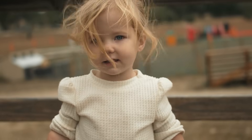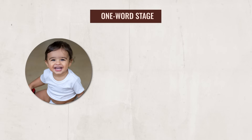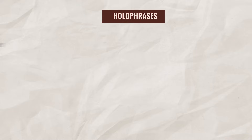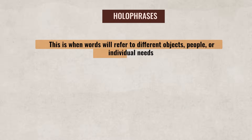Around 12 to 18 months, the child enters the one-word stage. During this stage, the child will start to say words such as 'mom,' 'dad,' or 'ball,' and the words the child says often represent an entire idea. For example, 'milk' might mean 'I want milk' or 'I dropped my milk.' Single words used to communicate a larger meaning are known as holophrases — this is when a word refers to different objects, people, or individual needs, with each word conveying a bigger meaning or idea than the word itself.